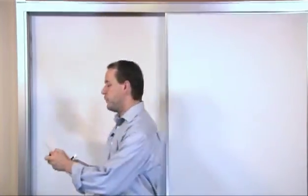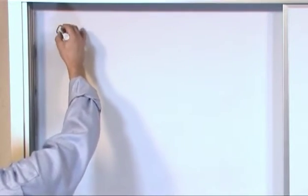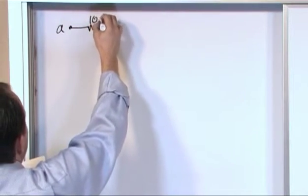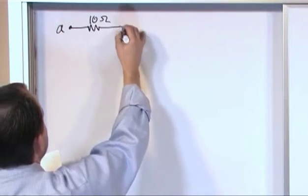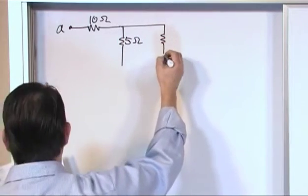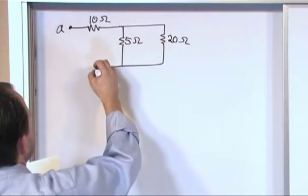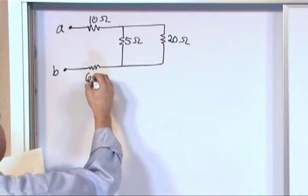So let's work through a few of these things that you might typically be asked to do. Here at terminal A, let's say we have a 10 ohm resistor connected to a 5 ohm resistor, and that's connected in parallel with a 20 ohm resistor. And we have another resistor on the way out to terminal B, this is 6 ohms.